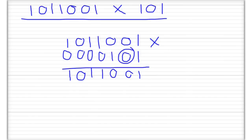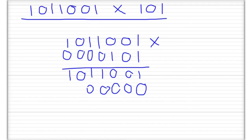Now we need to move over to the next digit on the bottom. We need to shift to the left, so we put a 0 here and then: 0 times 1 is 0, 0 times 0 is 0, 0 times 0 is 0 — and obviously these are all going to be 0, so we can just continue putting in 0s. We've shifted to the left, which means we have a digit hanging off on the left.